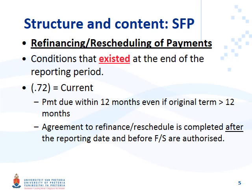Summary for paragraph 72: with refinancing and rescheduling of payments, look at the conditions that existed at year end. At year end, if you need to pay within 12 months it is a current liability — even if the original term was longer than 12 months, and also a current liability if you arrange after year end to refinance on a long-term basis.